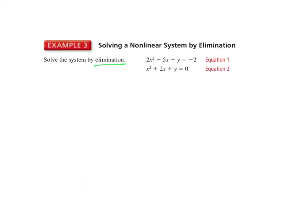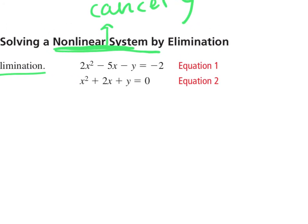For elimination, we combine our two equations and eliminate one of our variables. The difference with nonlinear systems is that when eliminating, we need to cancel out y. Y is always going to be the variable that we cancel out.